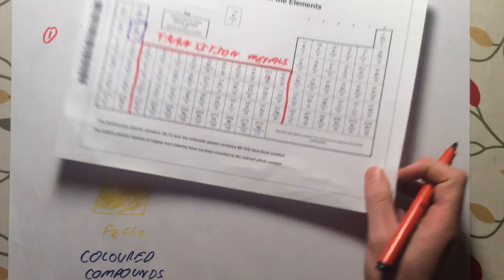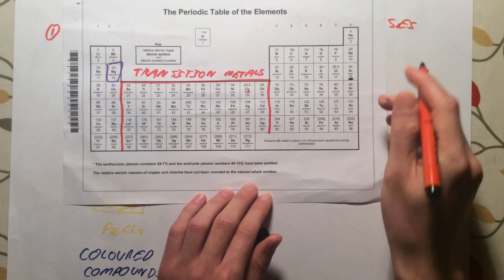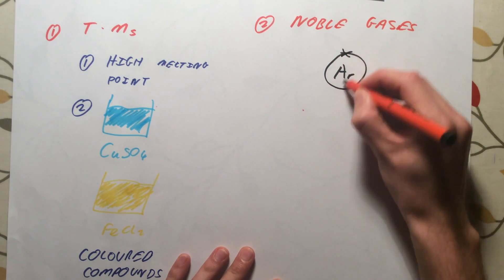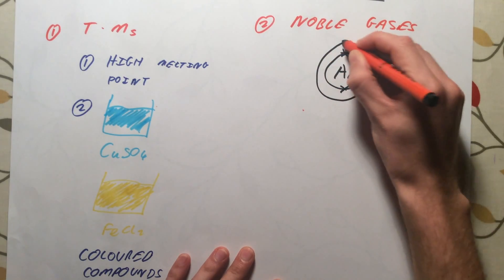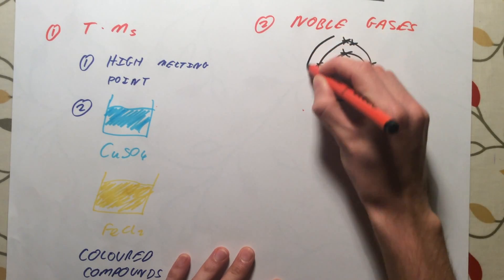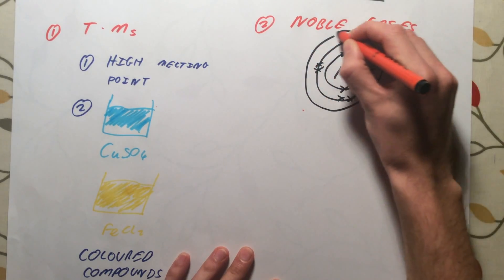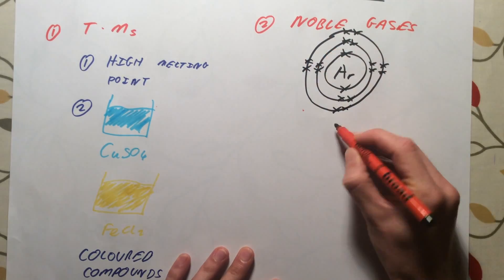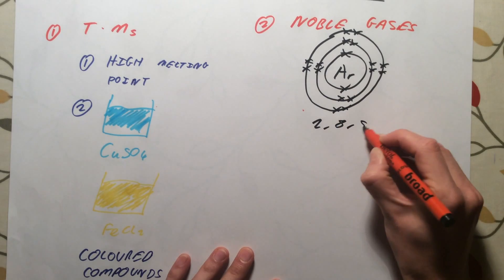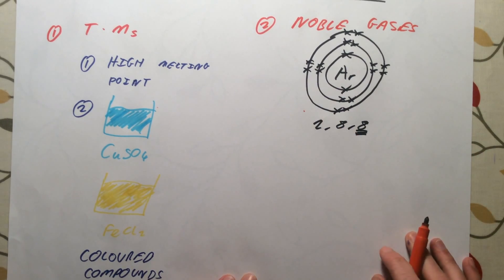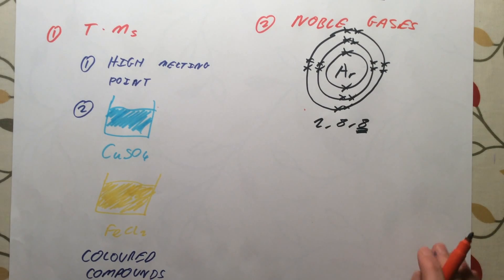If we take argon as an example, argon has got an atomic number of 18. It's got 18 electrons in total. In its first shell, we can fit 2. In its second shell, we can fit 8 electrons. And in its outer shell, we are going to have 8 to make this up to 18. We can represent that as 2, 8, 8. Argon has got a full outer shell of electrons. In fact, all of the noble gases have got full outer shells.